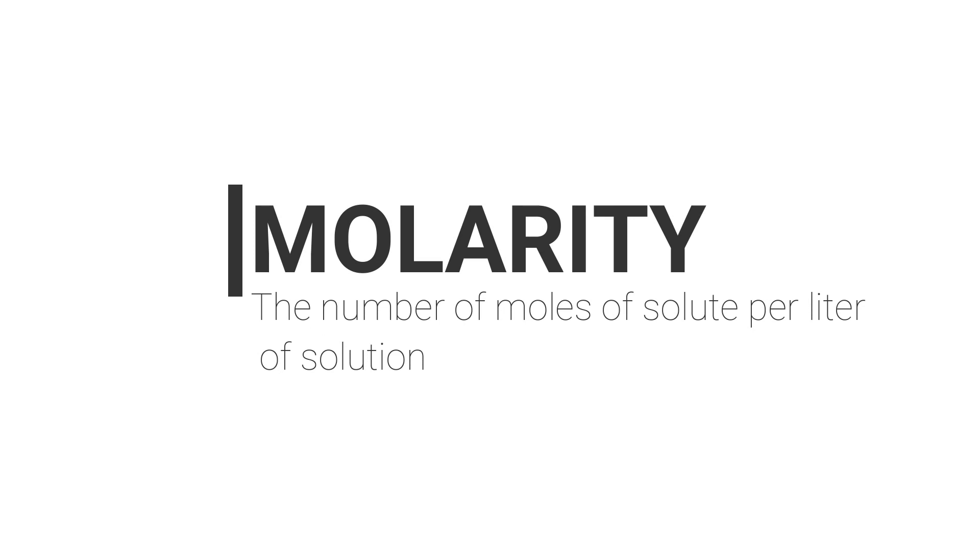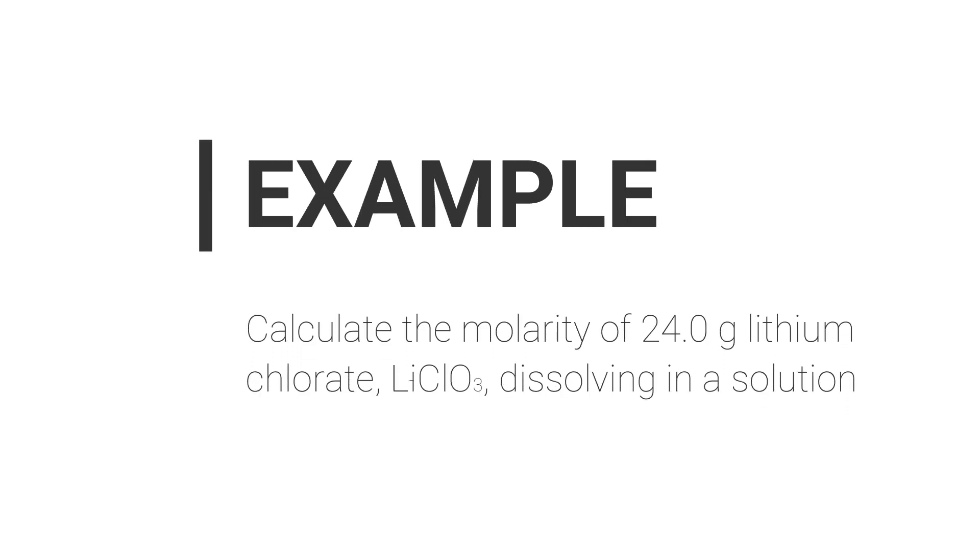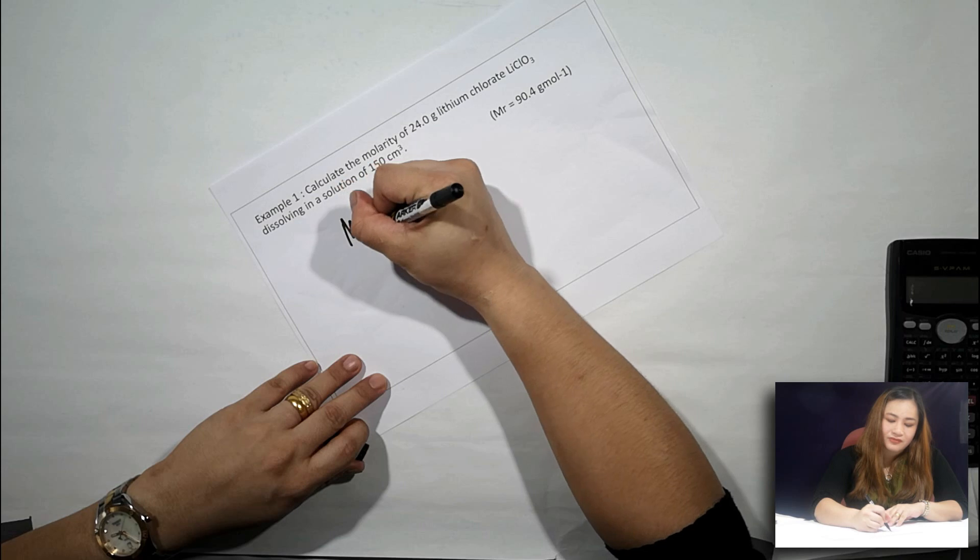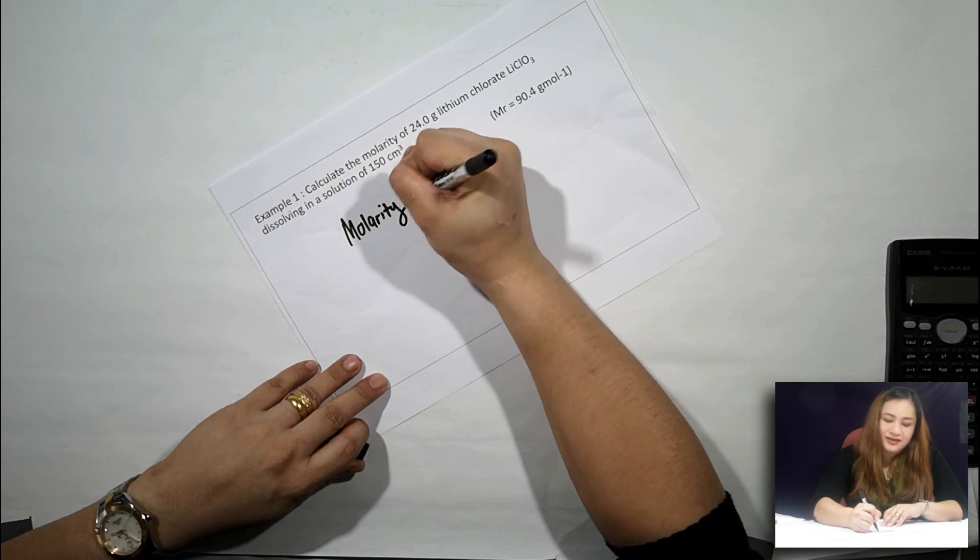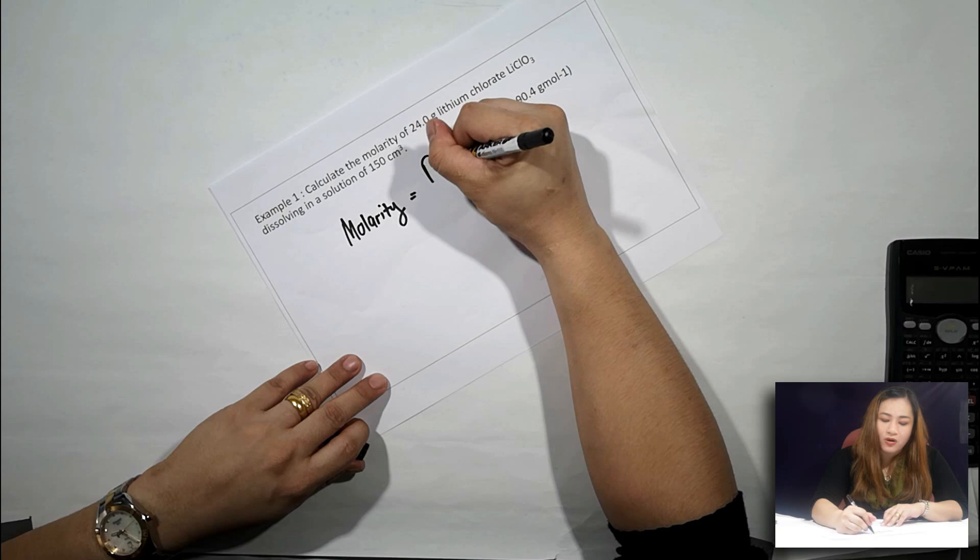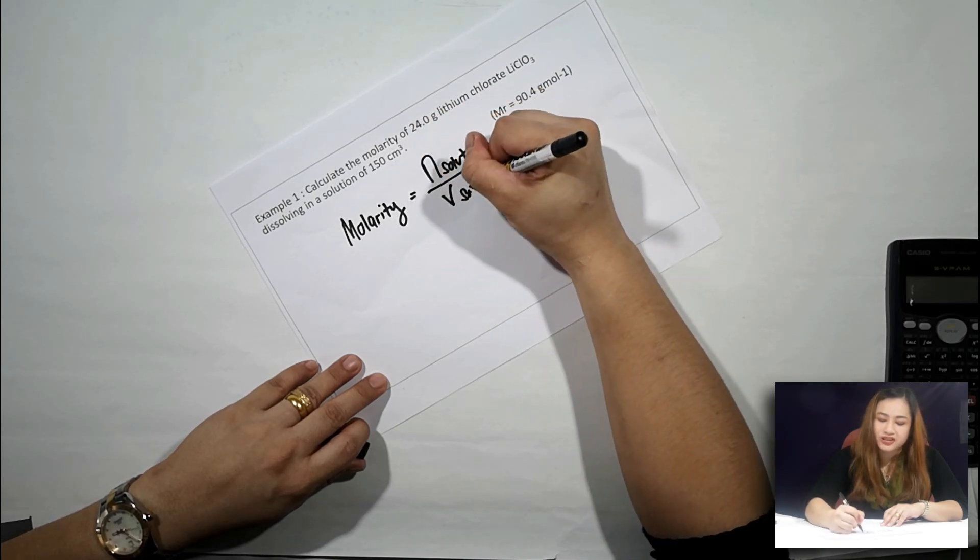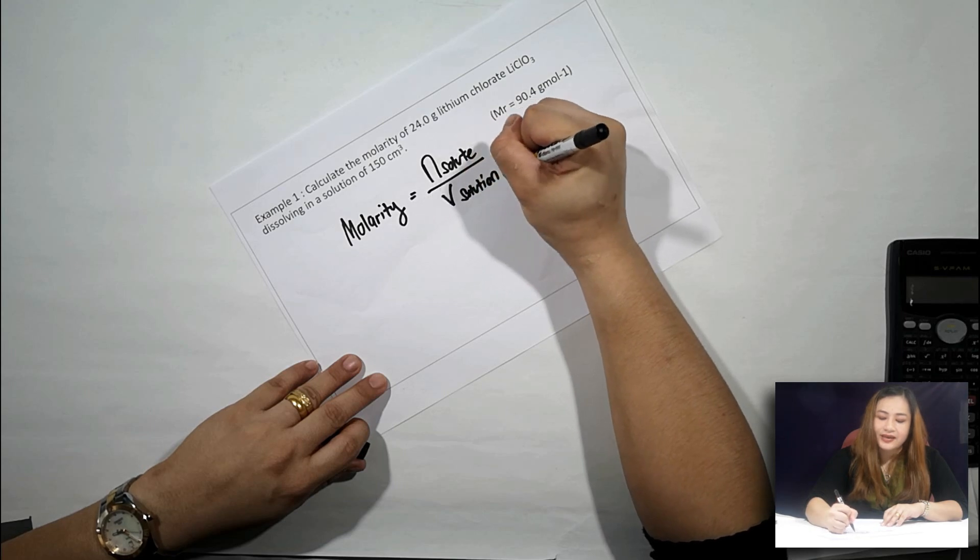Molarity is defined as the number of moles of solute per liter of solution. So let's calculate the molarity of 24 grams lithium chloride dissolving in a solution of 150 cm cubed. The molarity formula is equal to moles of solute over volume of solution in liters.